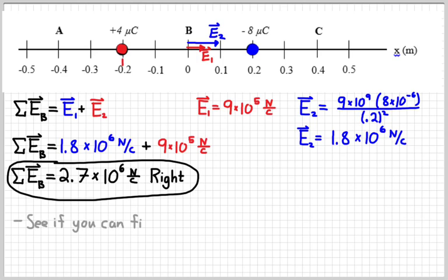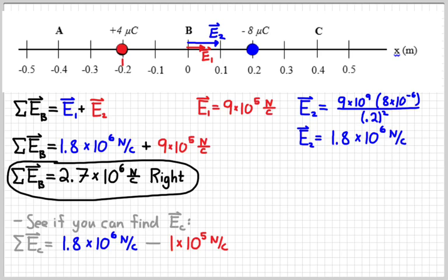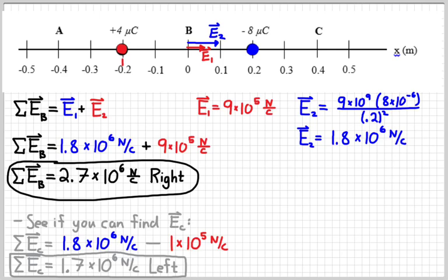See if you can find the net electric field at point C. At point C, you subtract the two fields. E2 is again 1.8 times 10 to the 6th, while E1, recalculated with the new distance of 0.6 meters, is about 1 times 10 to the 5th newtons per coulomb. The result is about 1.7 times 10 to the 6th newtons per coulomb pointing to the left. The negative charge is very powerful there compared to the positive charge, and it wins the electric field tug of war.